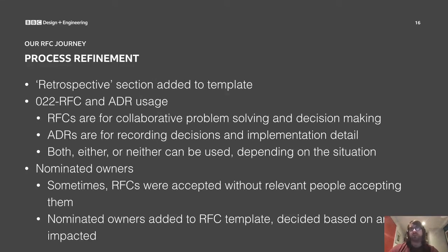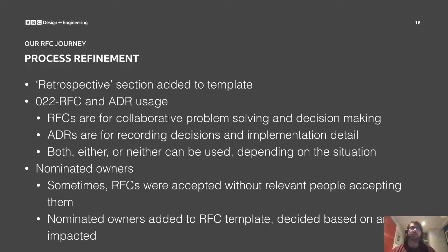The more we used RFCs, the more we discovered ways we could do them better. We found that we weren't really measuring the value or holding RFCs accountable, so we added a retrospective section to the RFC template. We also found ambiguity around their interaction with ADRs — architectural decision records. We decided you can use both, either, or neither, depending on the situation: RFCs are around collaborative problem-solving and decision-making, whereas ADRs are for recording decisions and implementation detail. We also found that RFCs were sometimes being accepted without relevant people being consulted, so we implemented nominated owners — defined people who had to sign off on an RFC before it could be accepted.